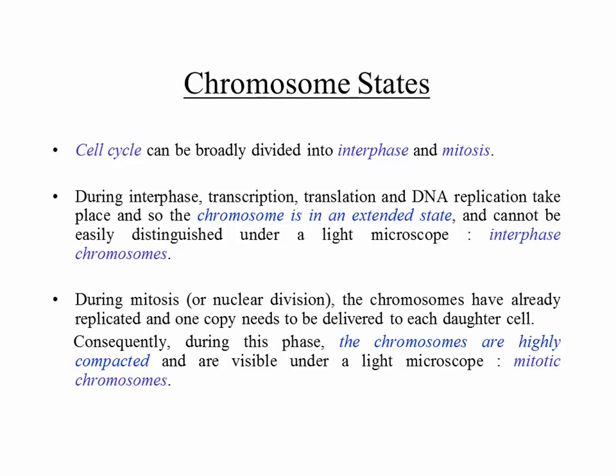The first time chromosomes were identified under a microscope was when the cell was actually dividing, because then the chromosomes are compacted. During mitosis, the chromosomes have already replicated, and one copy needs to be delivered to each daughter cell. You have to package the two replicated chromosomes very compactly and then pull them apart. The chromosomes in this stage are highly compacted and visible under a light microscope — these are referred to as mitotic chromosomes.